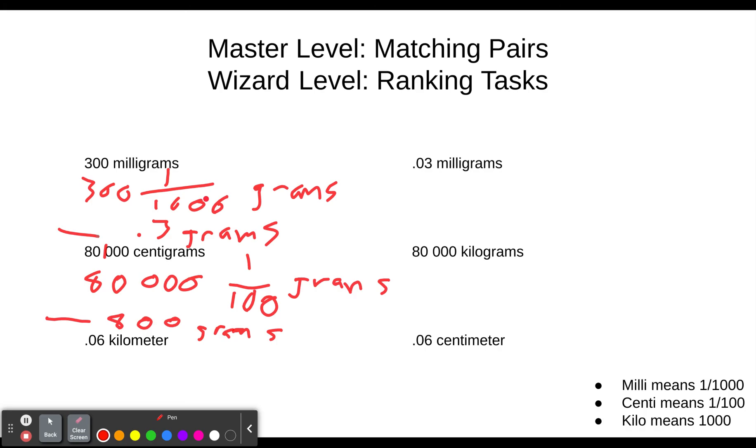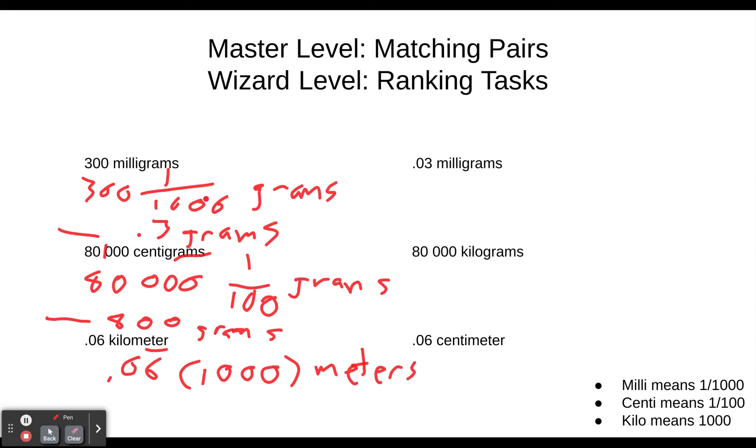And here we have something in kilometers. We just changed our base unit from grams to meters. But the prefixes work the same way. So we have 0.06, then kilo means a thousand meters. Which then we can multiply that out. If we're multiplying something with three zeros, we move the decimal point the other direction, or once again, just grab your calculator, and we have 60 meters.